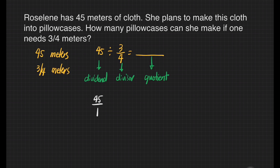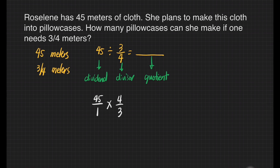The next step is to change our divisor to its reciprocal. What is a reciprocal? We just interchange the numerator and denominator. Since we have 3/4 here, this becomes 4/3. The next step is to change the division sign to a multiplication sign. Then we can perform multiplication of fractions.